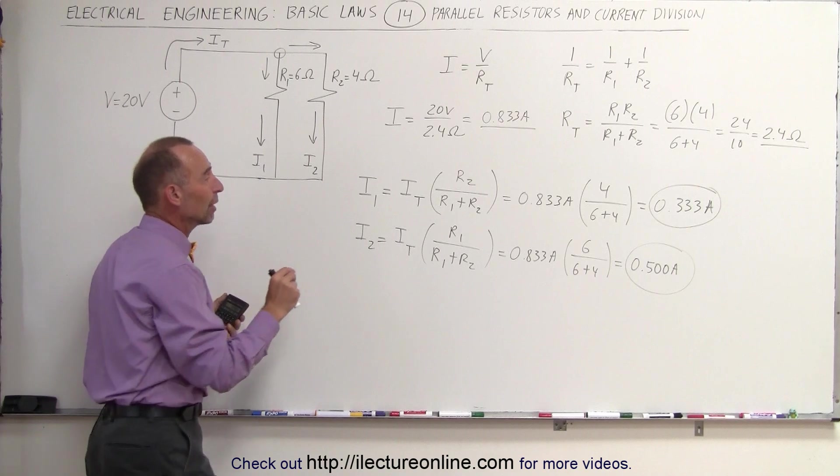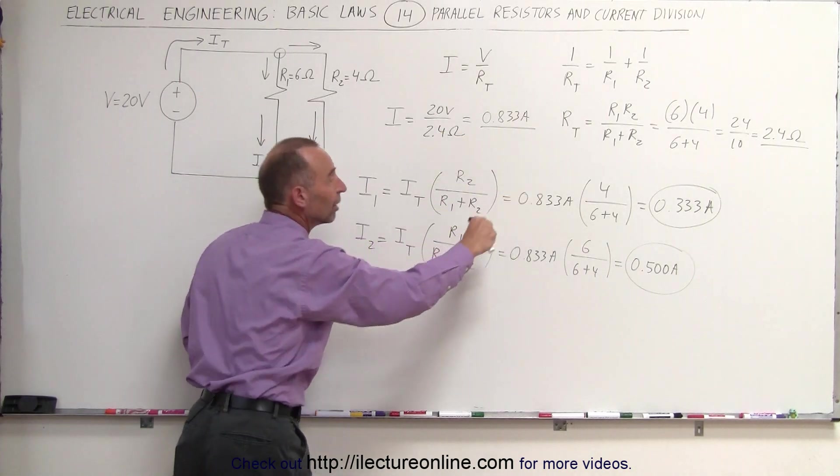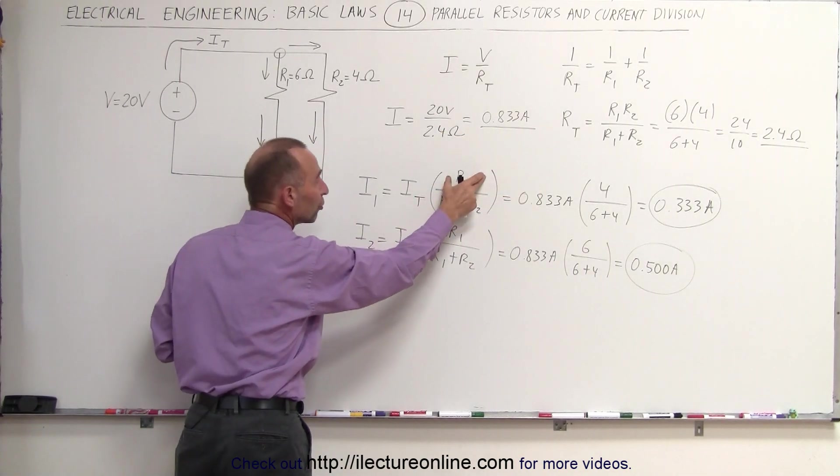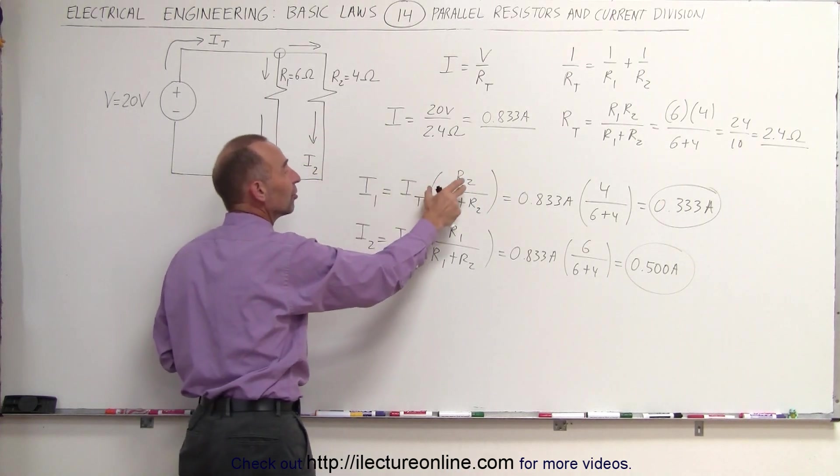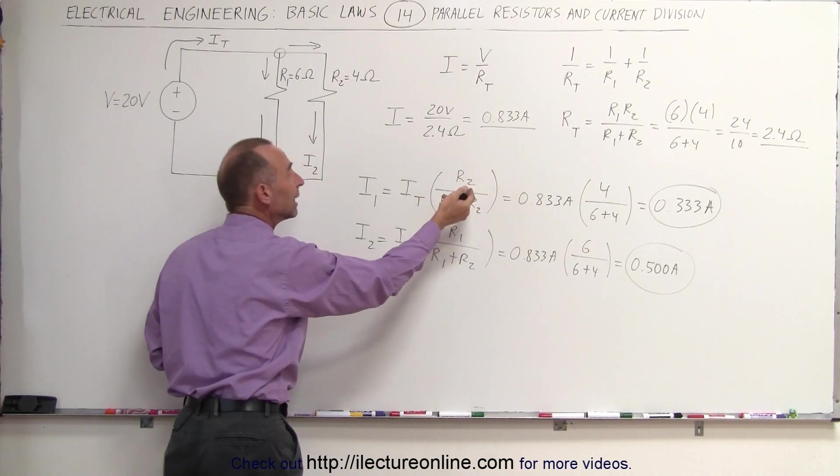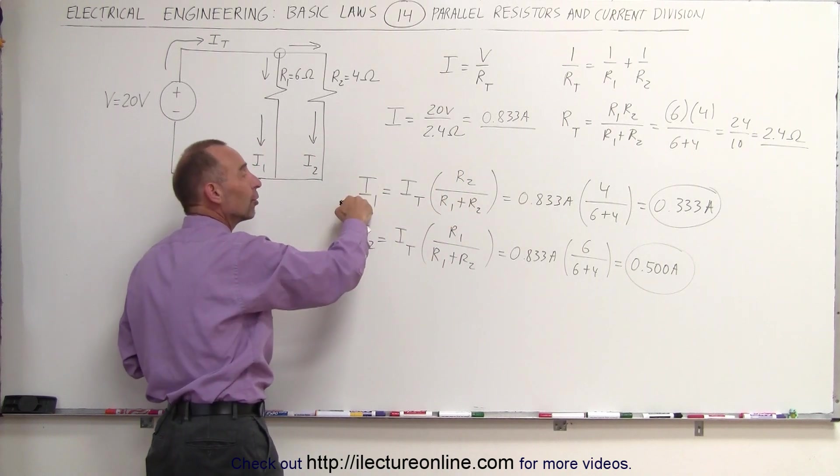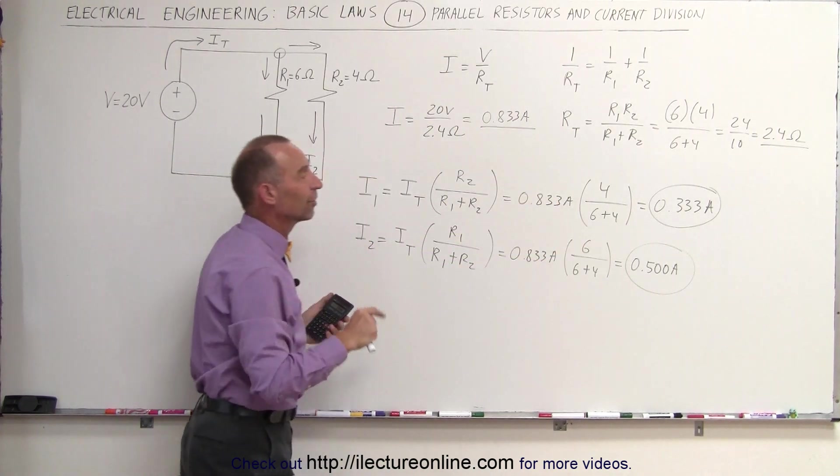That's why we multiply times the ratio of the resistance in the other branch. If the other branch has a larger resistor, then we get more current in this branch. If the other resistor has a smaller resistor, then we get less current in our branch because more will go to the other branch.